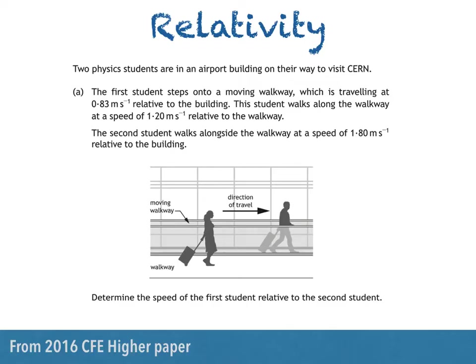So this is the first student — the one on the right — and this is the second student. If you were standing in the airport building and saw both students go by, the speed of the first student relative to you would be 0.83 metres per second — that's the speed of the walkway — plus 1.2 metres per second, their walking speed on the walkway. That means that relative to the building, student 1 has a speed of 2.03 metres per second.